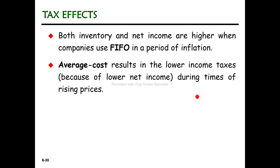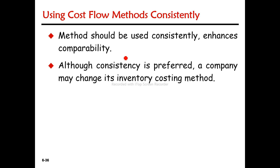The tax effect is that the inventory and net income are higher when companies use FIFO during inflation. You can use FIFO. In the inventory, the average cost leads to a higher income tax rate. The average cost of the income tax rate means the tax is relatively fixed.